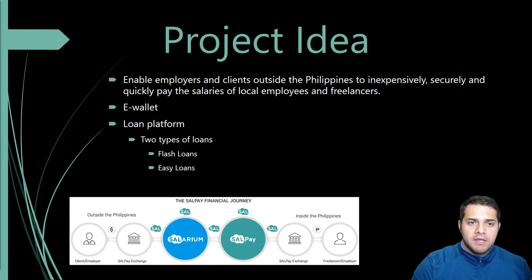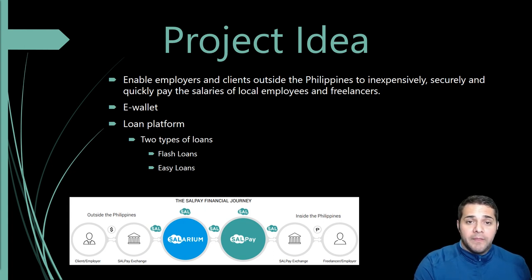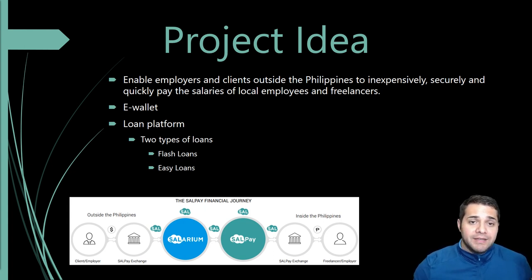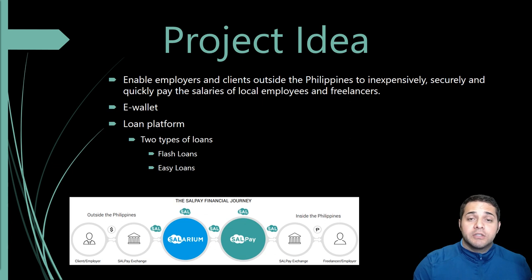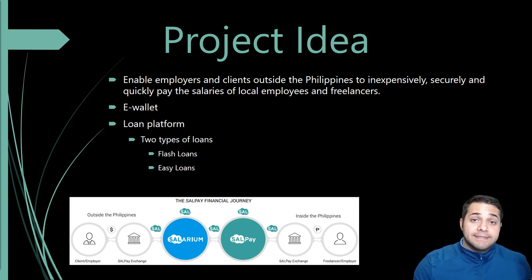The loan platform has two types of loans. Flash loans — since Solarium is the one dispersing salaries, if someone is short at the end of the month and trying to pay someone but doesn't have enough money, the user can go into their app and ask for extra cash, and it's added to their wallet in a second.